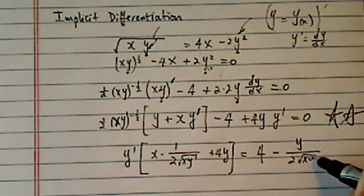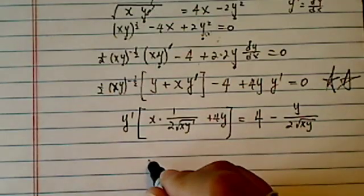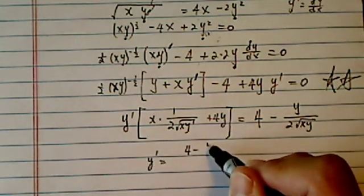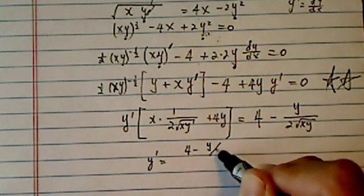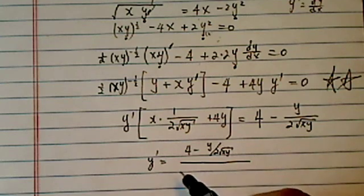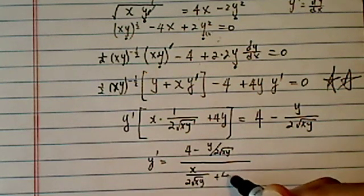Okay, let's clean up one step. y prime is equal to 4 minus y divided by 2 radical xy divided by x over 2 radical xy plus 4y.